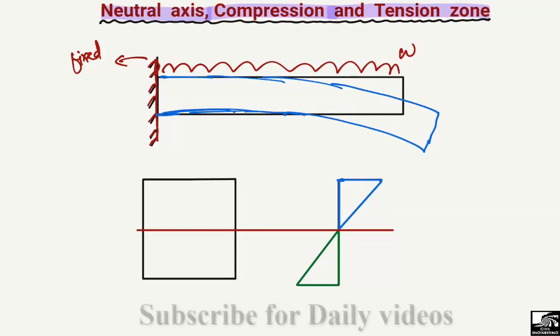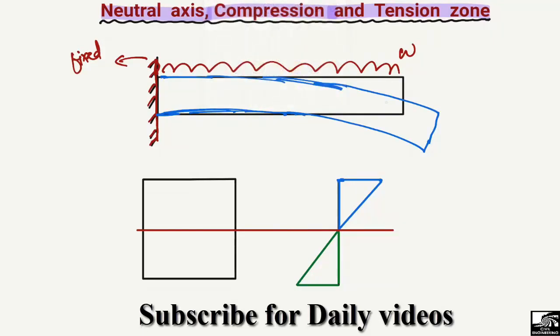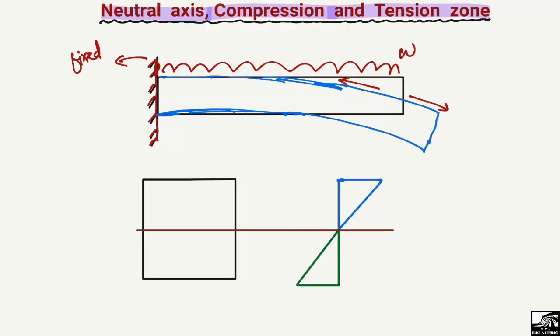Its behavior under loading will be like this: at the top of the beam it will be extended in length, so we will have tensile stresses in the top section of the beam. At the bottom, the length is contracted, so we will have compressive stresses at the bottom of the cantilever beam.